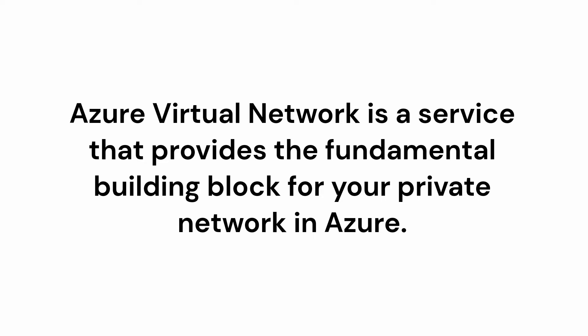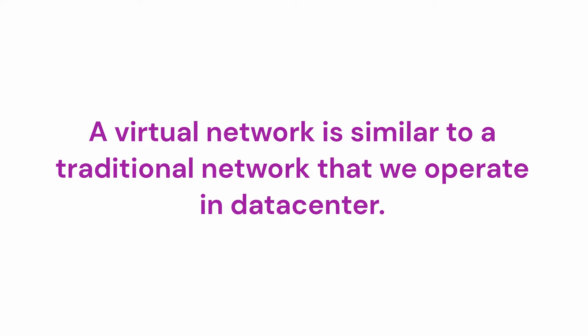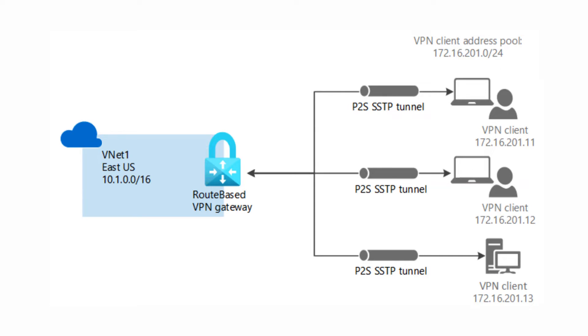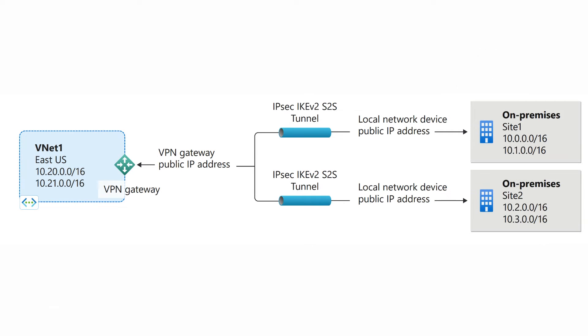Before we create the diagram, let's understand the key definitions. Azure Virtual Network is a service that provides the fundamental building block for a private network in Azure, similar to the traditional network in a data center. Azure VPN Gateway is a service that uses a specific type of virtual network gateway to send encrypted traffic between an Azure virtual network and an on-premise location or remote computer. Two types of VPN gateway can be configured: point-to-site, which connects a remote computer to the Azure virtual network, and site-to-site, which connects an Azure virtual network to your data center.